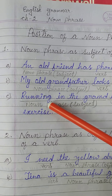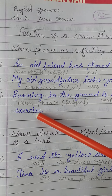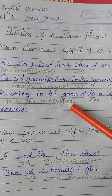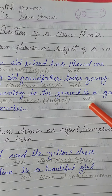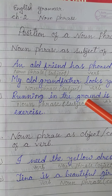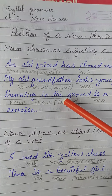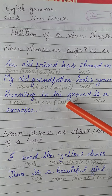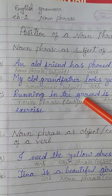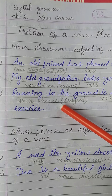Example C: 'Running in the ground is a good exercise.' In this sentence, 'running in the ground' is the subject and 'is' is the verb. This group of words, 'running in the ground', acts as the subject of the verb 'is'. That's why we can say 'running in the ground' is a Noun Phrase.